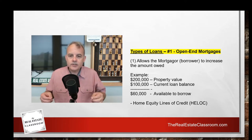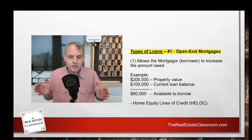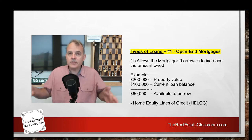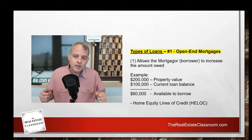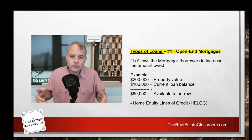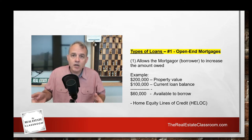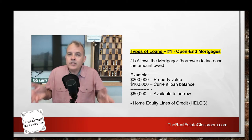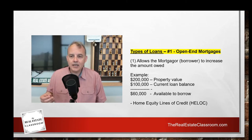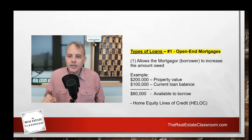On screen, I've noted $60,000 available to borrow. Typically, the lender sets a loan-to-value ratio — maybe 75% of the home value. So with a $200,000 home and a $100,000 loan balance, the lender is willing to lend up to $160,000, leaving $60,000 you can draw on whenever you want. There's no interest paid until you actually borrow against it. That $60,000 is available for home repairs or whatever you need. That's a home equity line of credit — a HELOC — one type of open-end mortgage.